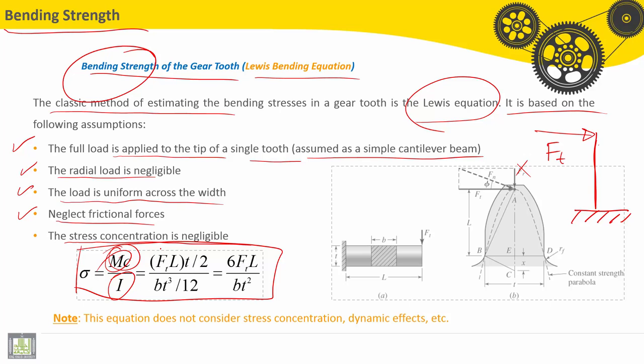And distance is L. Here, this is the distance. Multiply it by C. C is the distance here, T over 2. This is the distance T, the thickness of the tooth. This is the neutral axis. So here we have this distance is half of T.